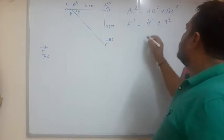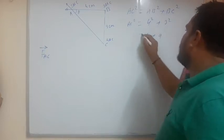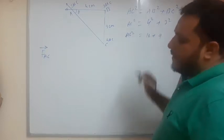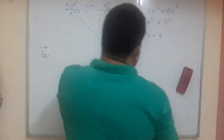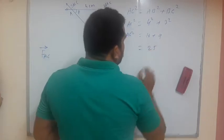Now, so the square of 4 is what? 16. The square of 3 is what? 9. This is what? AC square. So 16 plus 9 that is 25. That is 25.